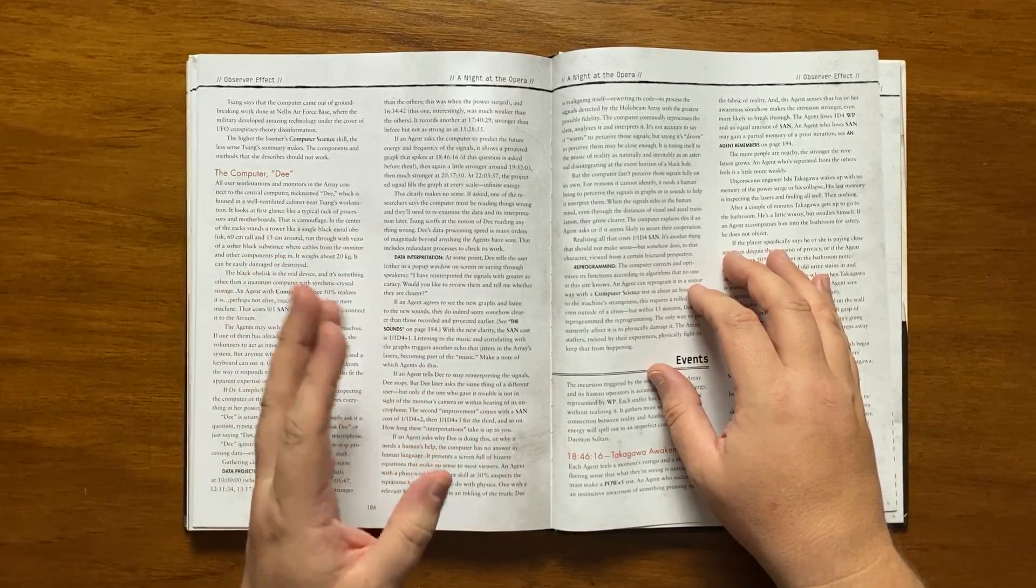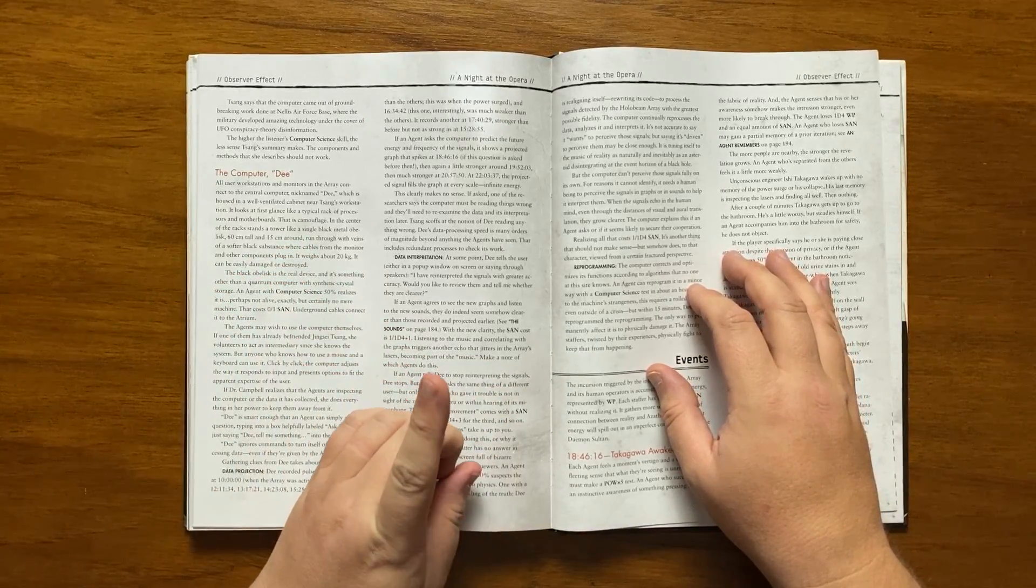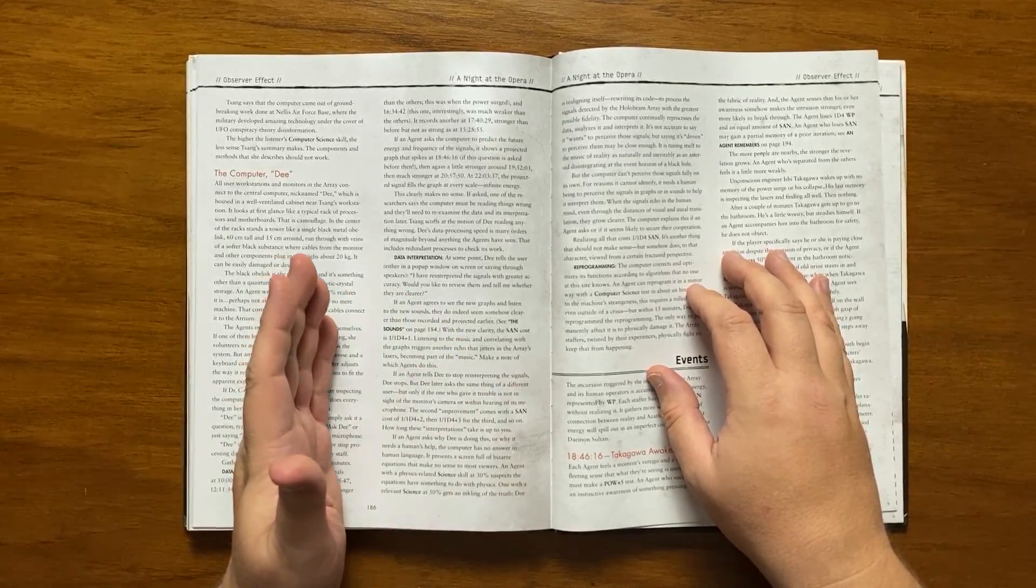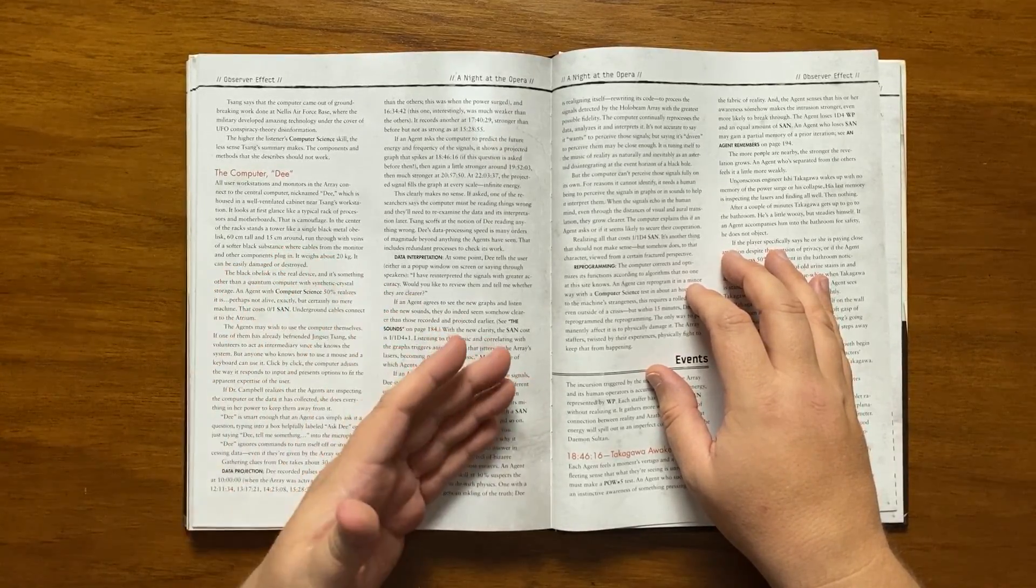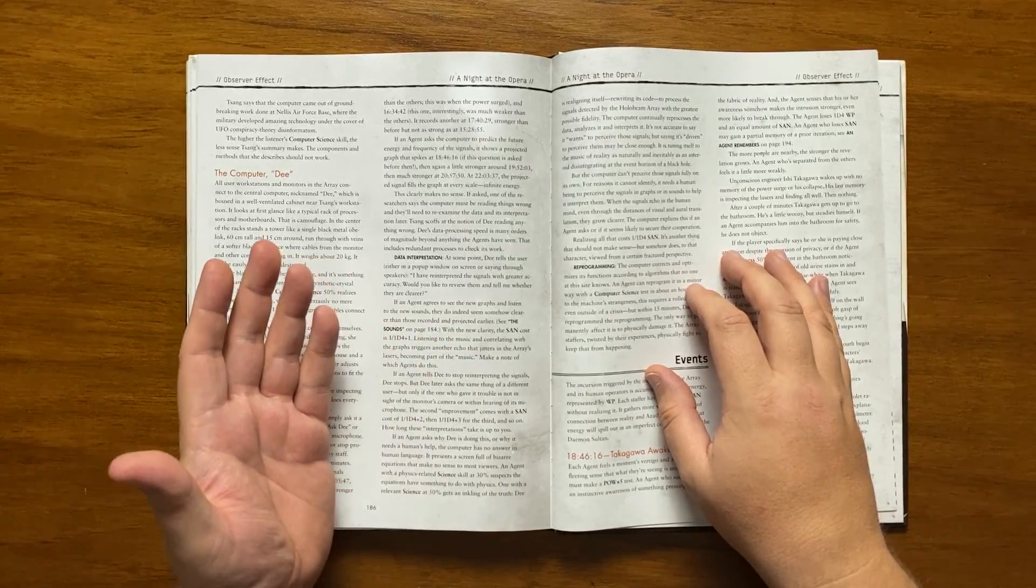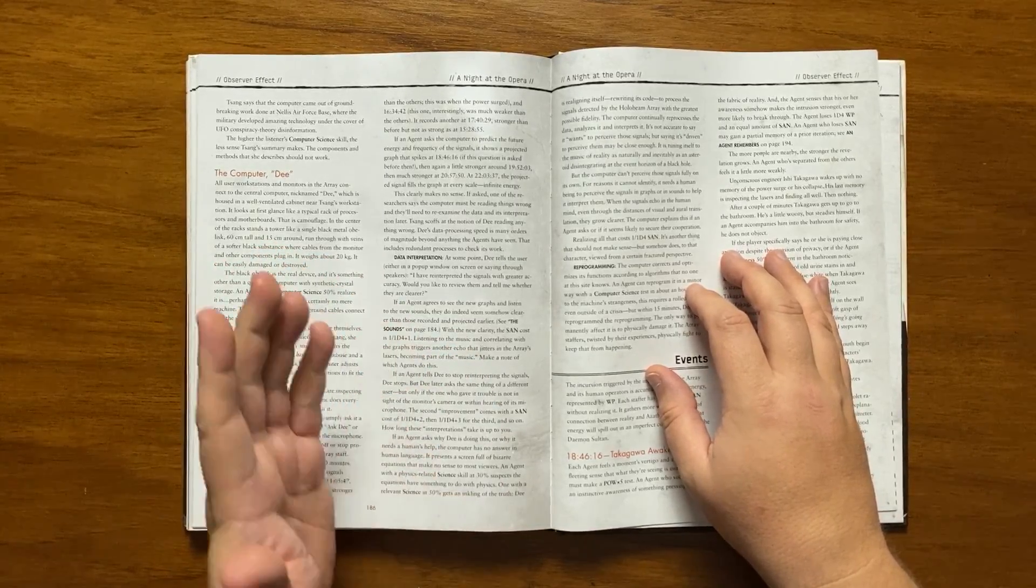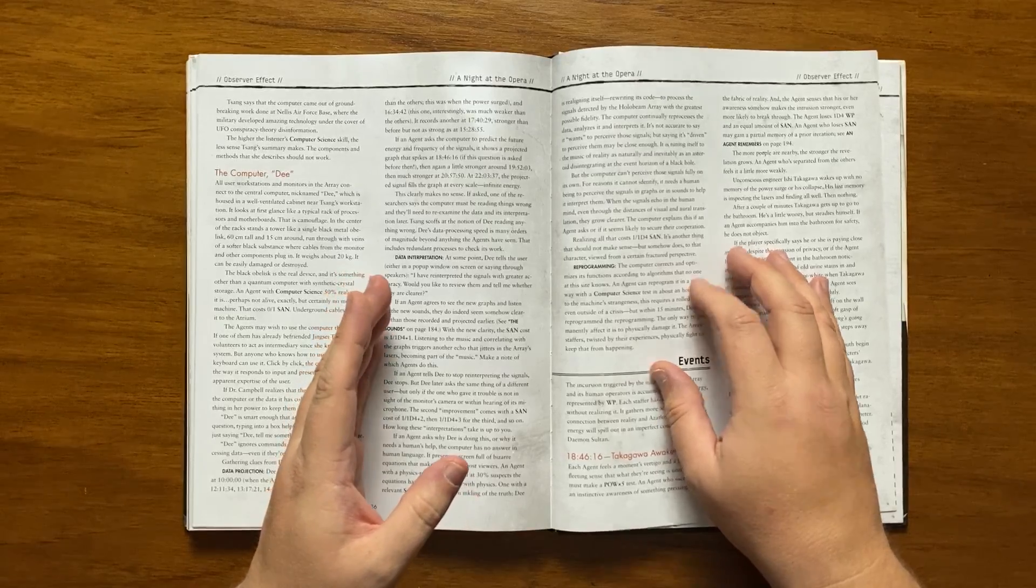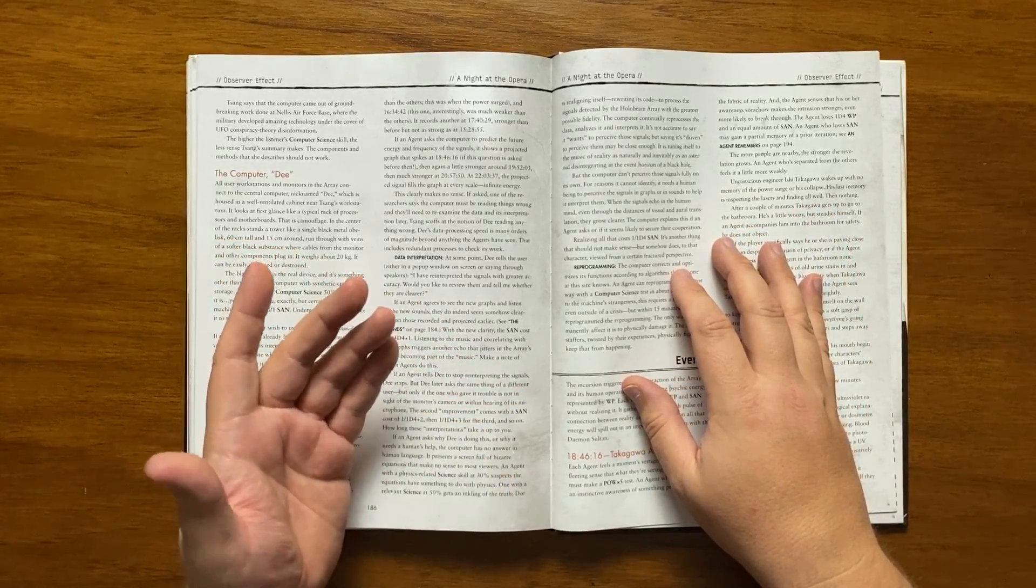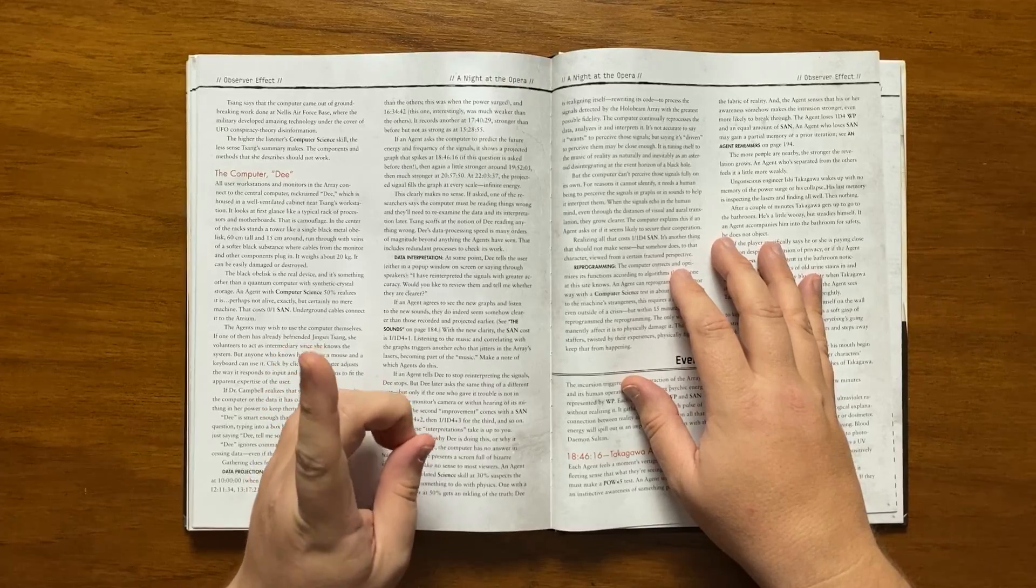This is the real device and anyone knowledgeable will understand that this is no mere computer. Should an agent ask to use D and they've befriended Sang, she will happily show them and it will respond to import and adapt to fit the expertise of the user, though if Campbell finds out she will do everything in her power to stop it. D is clever enough for the agents to be able to type in a question and get the answer they require. It will not turn itself off or stop processing data from the array even if told to by the staff here.